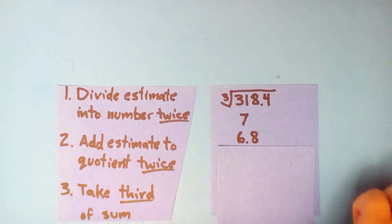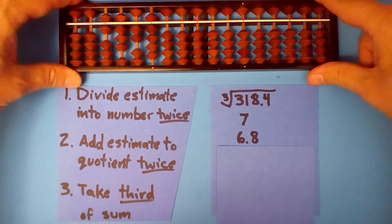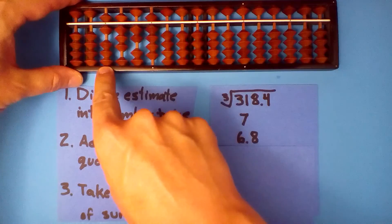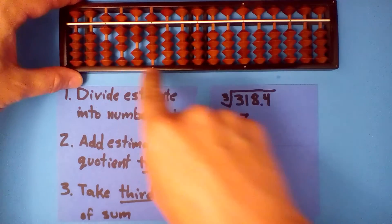Pause if you're not ready. If you're ready, your improvement should be 6.829.